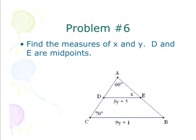Alright. So find the measures of X and Y. D and E are midpoints. So D and E being midpoints is very important because that tells me that DE is a midline and I know that DE is then parallel to CB. The reason why that is important is because I have angles that are congruent. So these two angles are congruent, which means that this guy is 70. So there's already a lot of information I know, and I can easily